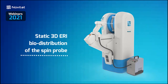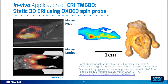In the following part, I would like to present some in vivo results using the ERI TM600 tomograph. As a first example, here are classic static images showing the distribution of the trityl spin probe in the head and in the lower part of the mouse body. On the left side, the EPR images are overlapped on a CT scan, and on the other side of the slide there is a three-dimensional visualization of the spin probe distribution in the mouse head. As you can see, the spin probe used did not cross the blood-brain barrier, which is clearly visible in the presented figures. These data were published last year in the Free Radical Biology and Medicine Journal.